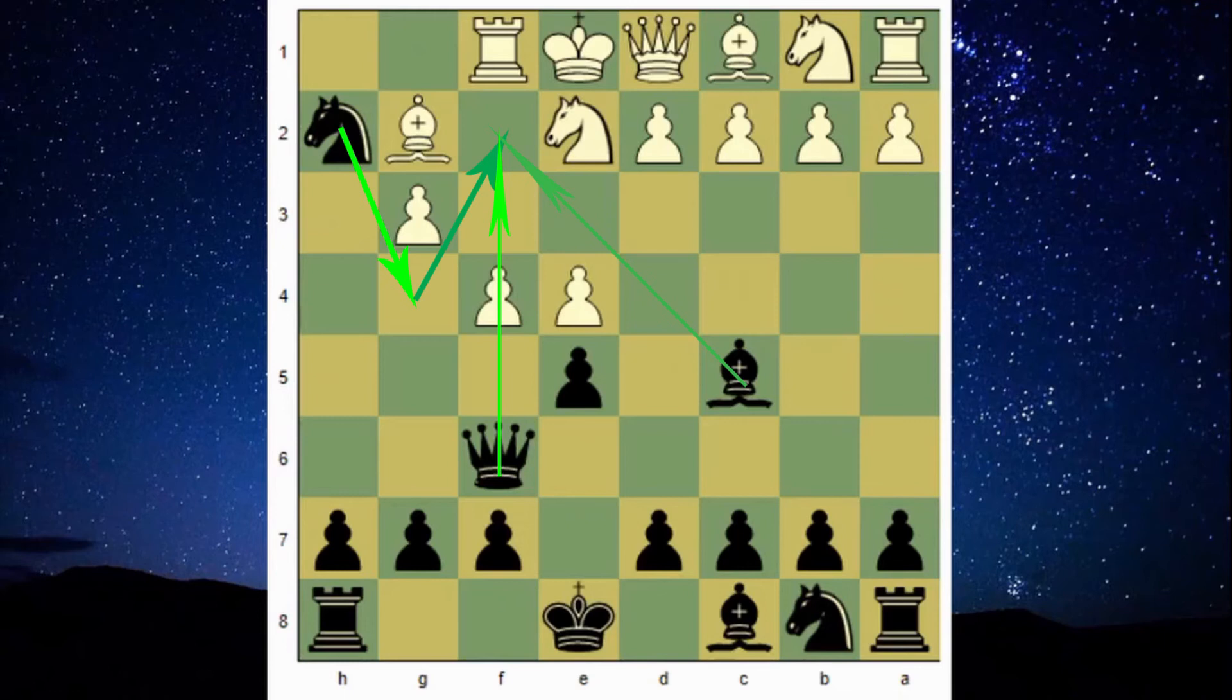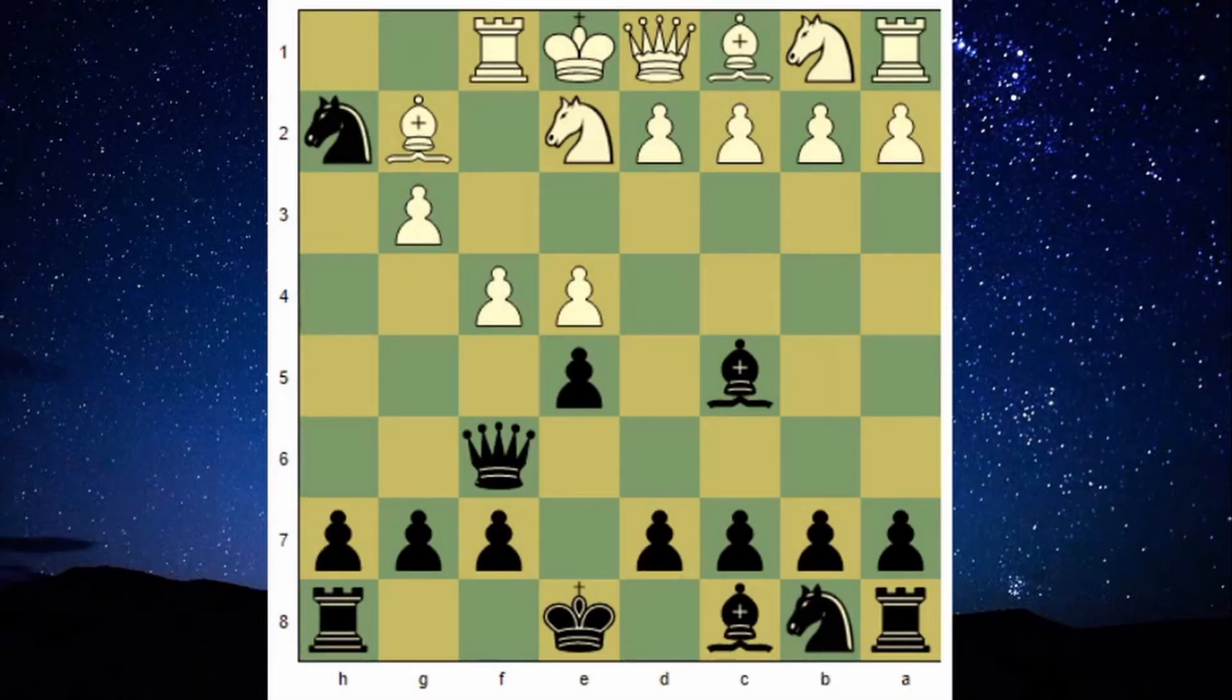But black is a pawn up and all three pieces are eyeing on f2 square, pressurizing white's kingside. So if most of the pieces are extended carefully then black can win this game easily. But what if white wants to play aggressively and capture the e5 pawn?